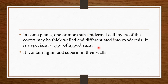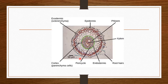Sub-epidermal cells form a specialized type of hypodermis called exodermis. The exodermis contains lignin and suberin depositions in their walls. This exodermis mainly prevents foreign pathogens and also prevents loss of water from the root system. This dark-colored part is the exodermis, visible just below the epidermis in some plants.